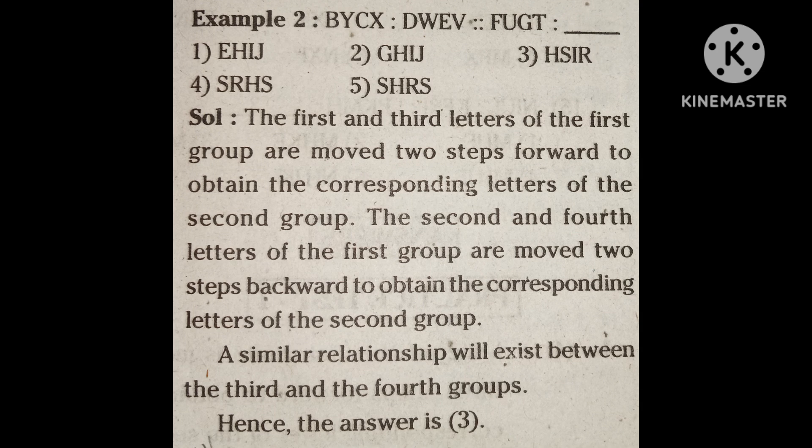The first and third letters of the first group are moved two steps forward to obtain the corresponding letters of the second group. The second and fourth letters of the first group are moved two steps backward to obtain the corresponding letters of the second group. A similar relationship will exist between the third and the fourth groups. Hence, the answer is 3.